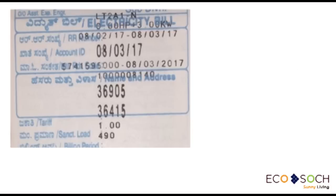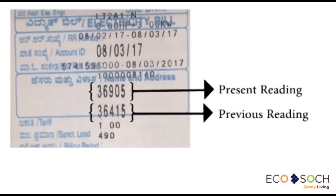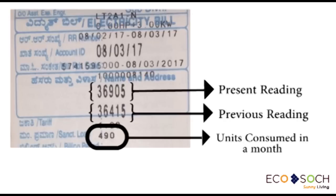In order to calculate monthly energy consumption, ESCOM, or Energy Supply Company, stores your previous meter reading and compares it with the present reading. The difference between the present and previous reading gives the total consumption over a month.